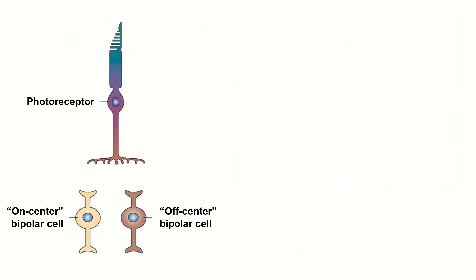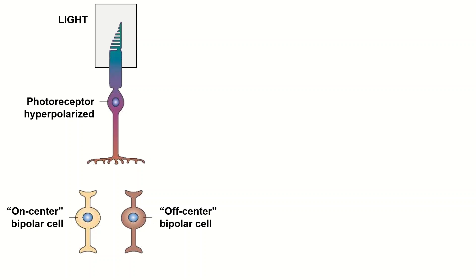In humans, photoreceptors hyperpolarize in response to light due to opsins breaking down in the receptor. Photoreceptors only respond with graded potentials and release glutamate proportionally to the level of depolarization, so when the receptor hyperpolarizes in the light it will release less glutamate.